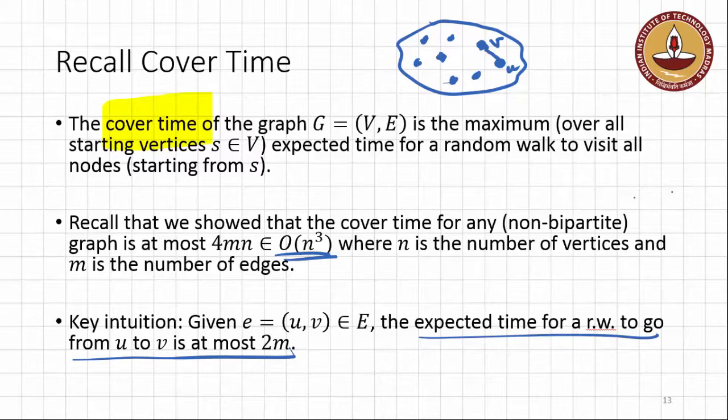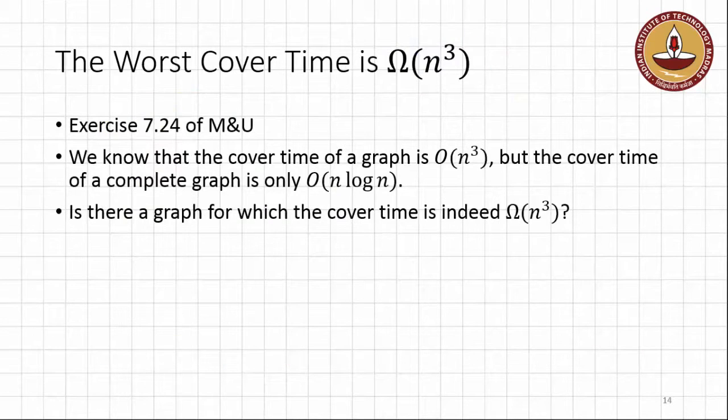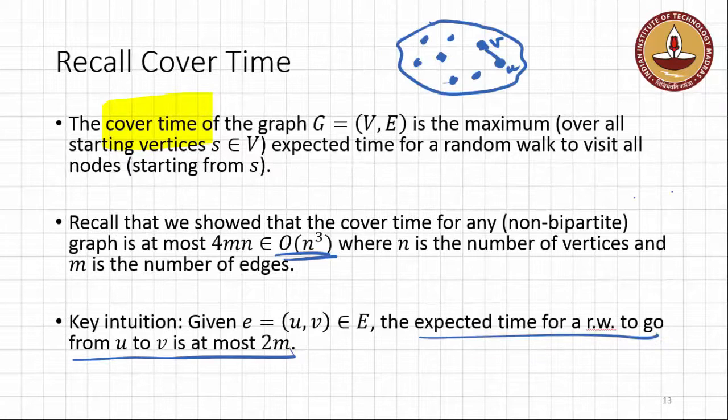And then to complete the proof, what we did was we considered a spanning tree of this graph and then we argued that we could cover the spanning tree in at most 4MN time steps. And we used, if you recall, we used linearity of expectation to do that.